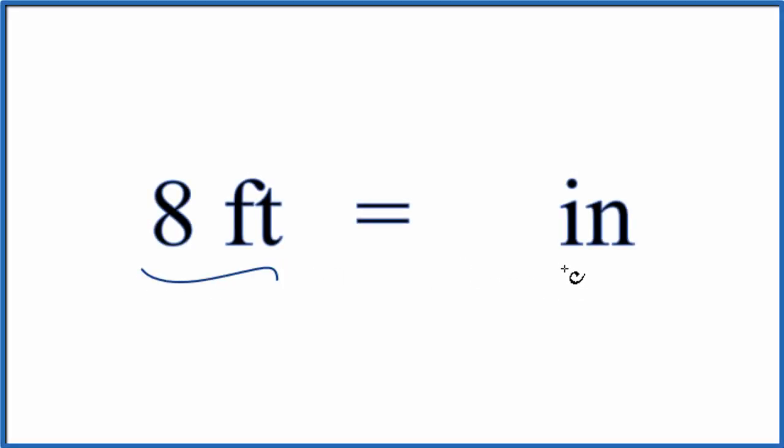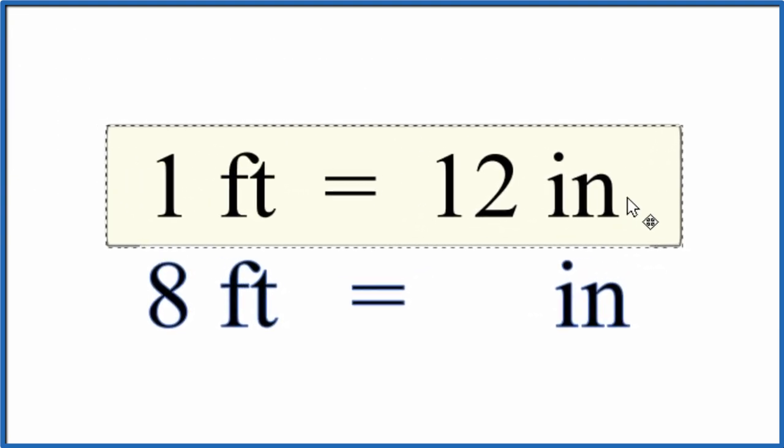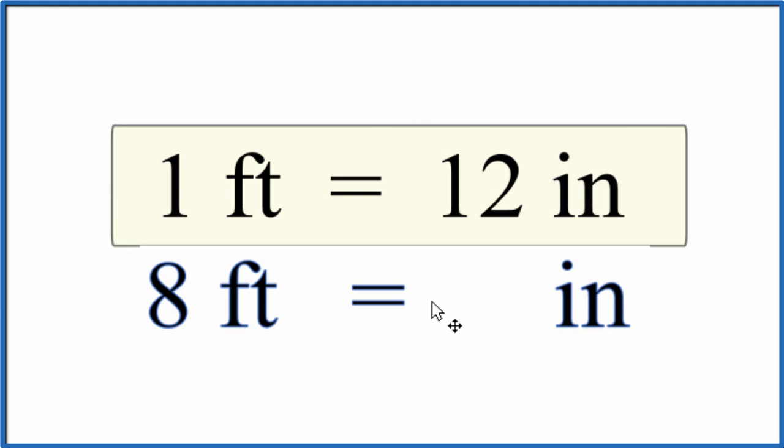Let's convert 8 feet to inches. The first thing you need to know is that one foot is equal to 12 inches. And that's just something you memorize. One foot equals 12 inches. So for every one foot we have 12 inches.